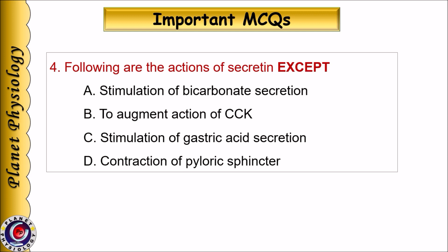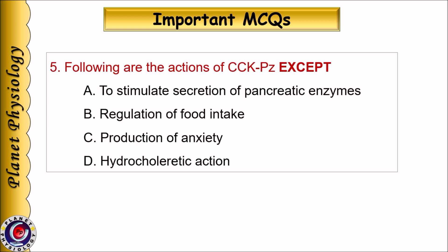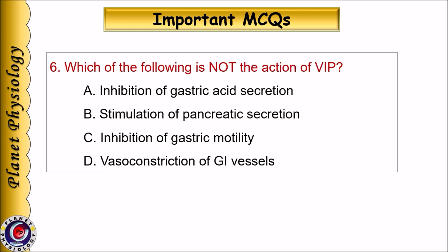Number 4: Following are the actions of secretin, except: A. Stimulation of bicarbonate secretion, B. To augment action of CCK, C. Stimulation of gastric acid secretion, D. Contraction of pyloric sphincter. Number 5: Following are the actions of CCK-PZ, except: A. To stimulate secretion of pancreatic enzymes, B. Regulation of food intake, C. Production of anxiety, D. Hydrochloretic action. Number 6: Which of the following is not the action of VIP? A. Inhibition of gastric acid secretion, B. Stimulation of pancreatic secretion, C. Inhibition of gastric motility, D. Vasoconstriction of gastrointestinal vessels.